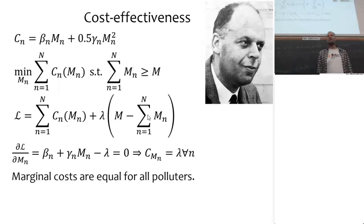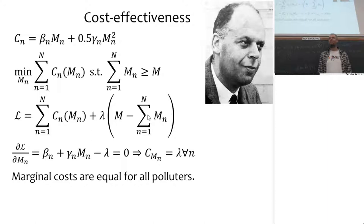The cheapest way of achieving a particular target is to equalize costs at the margin — that is cost effective. Now, there are people out there who use phrases like 'more cost effective' or 'less cost effective.' Those are people who haven't been paying attention in class, because cost effectiveness is a supremum — it's an optimum. You can't be more optimal. You're either cost effective or you're not.